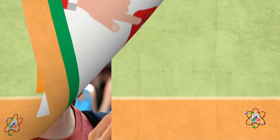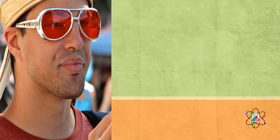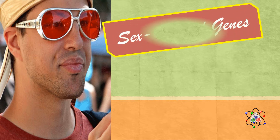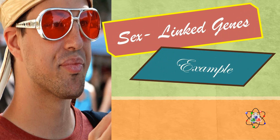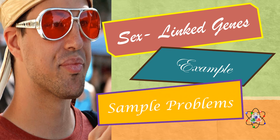For today's video, we are going to study about sex-linked genes. We will give examples of a trait under sex-linked genes, and we will solve problems by using a Punnett square of the characteristics of a sex-linked gene. So, let us start.